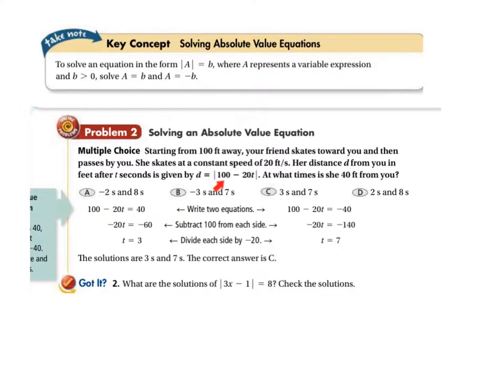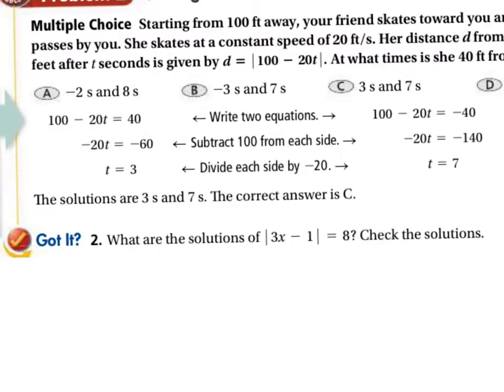So 100 feet away, gets closer, gets closer, closer, closer, closer, and then starts going away, away, away after she passes you. So solving this, we again are going to write two equations. So 100 minus 20t equals 40. And 100 minus 20t equals negative 40.